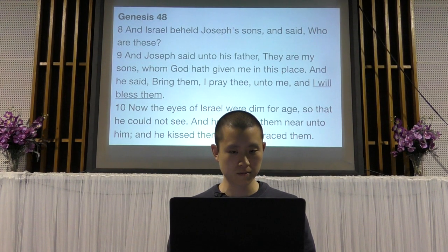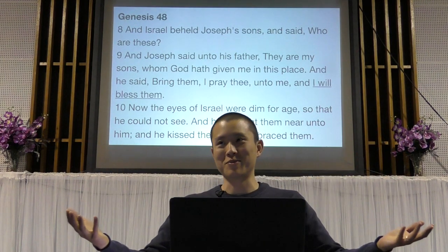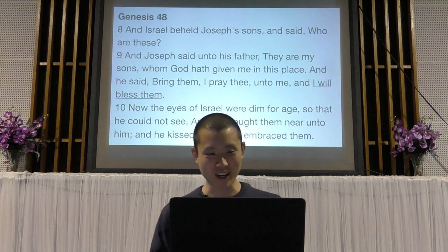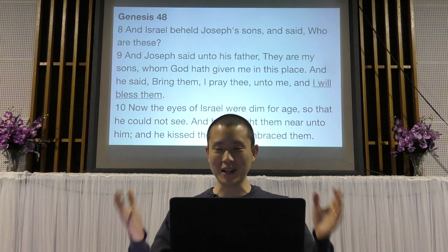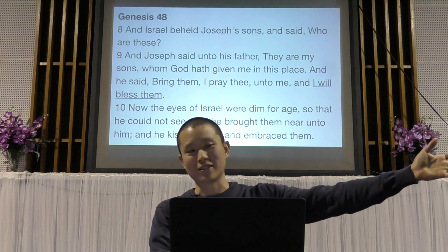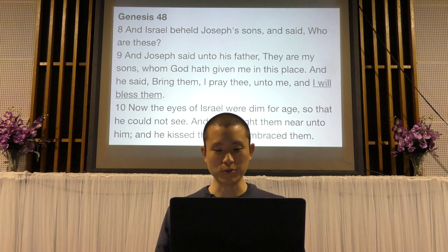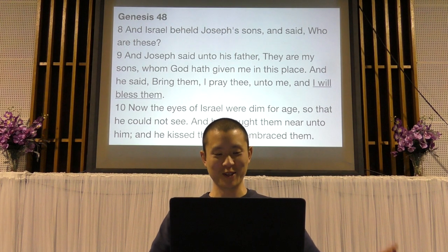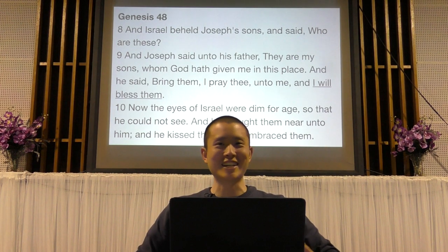Israel said to Joseph, "Who are these?" Joseph said, "These are my sons whom God hath given me in this place in Egypt." Israel said, "Bring them unto me and I will bless them." He brought them near and kissed and embraced them. Jacob had thought Joseph had died, and now he's seeing not only Joseph ruling in Egypt but also his grandchildren — and you can imagine what Israel was feeling seeing the children of his favorite son.